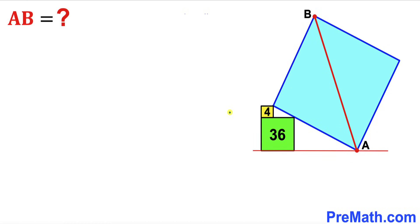Welcome to PreMath. In this video we have got these three squares put together as you can see in this diagram, such that the area of this yellow square is 4, the area of this green square is 36, and now our task is to calculate the diagonal AB of this blue square.